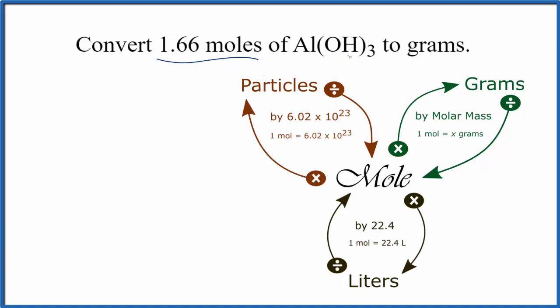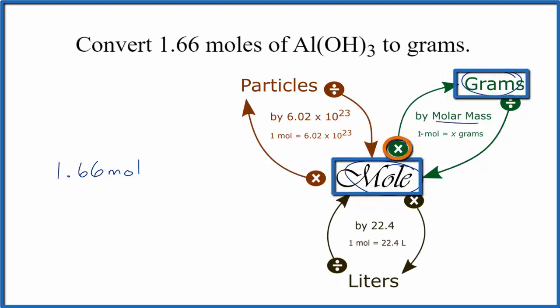We have 1.66 moles of aluminum hydroxide and we're converting from moles to grams. We have our moles here and we want to get to grams. We're going to multiply by the molar mass, which gives us grams.